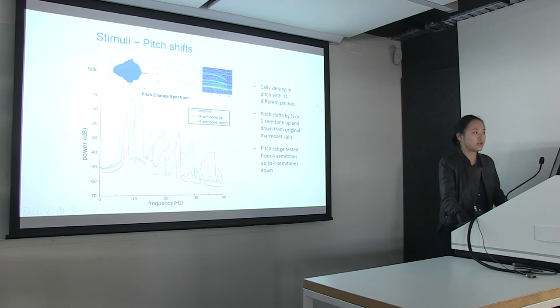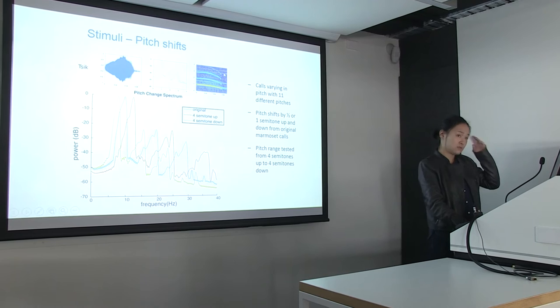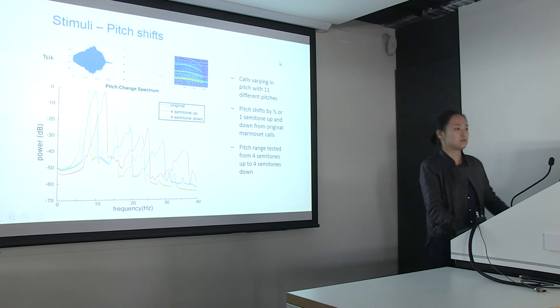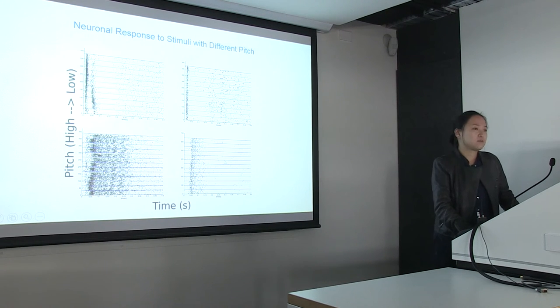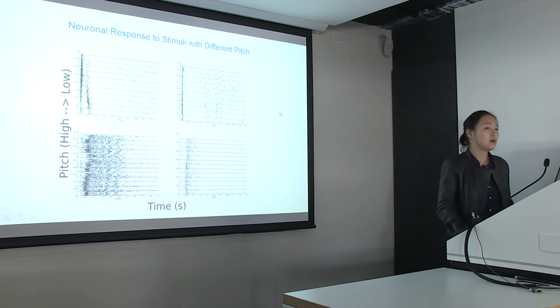As Ramesh mentioned before, we are interested to study how neurons represent pitch changes. So we take four different vocalization sounds, and for each of them, we shift the pitch of this signal by either half or one semitone up or down along the frequency axis. So we end up with signals where the temporal pattern is preserved, but the frequency components of those sounds have been changed. We are interested to see that when we play the same sounds at different pitch to the neuron, what the neural responses are looking like.